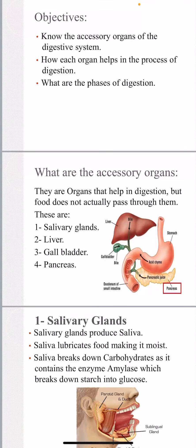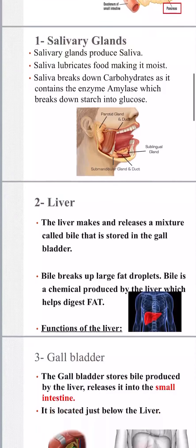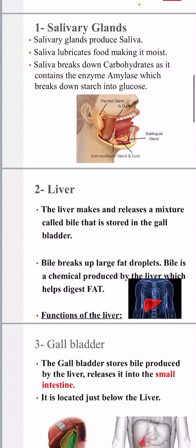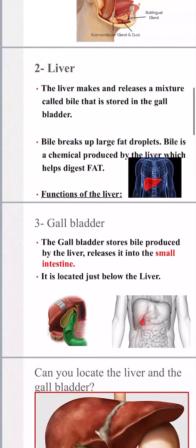There are four accessory organs. The first is the salivary glands, which secrete saliva in your mouth to primarily digest food chemically — that was covered in the last session. The salivary glands produce saliva that firstly lubricates the food by making it moist, and also contains the amylase enzyme that breaks down carbohydrate storage molecules into glucose.